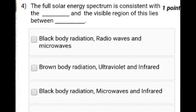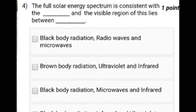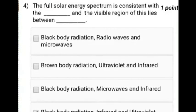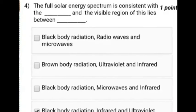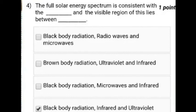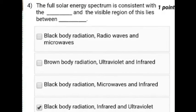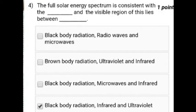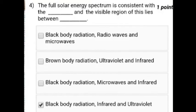The fourth question is: the full solar energy spectrum is consistent with dash and the visible region of these lies between dash. So the third question is black body radiation, infrared and violet, ultraviolet.